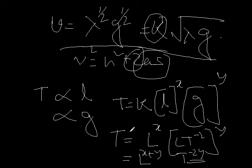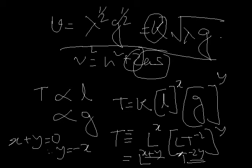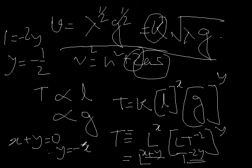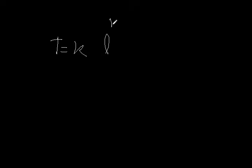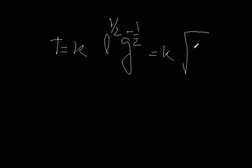Comparing powers: on the left side, T has power 1 and L has power 0. So we equate X plus Y to 0, meaning Y equals minus X. From the time comparison, 1 equals minus 2Y, so Y equals minus half. Since Y is minus half, X is plus half — because minus of minus half is plus half. Therefore, T equals K·L^(+1/2)·g^(−1/2), which we can write as K times the square root of L divided by G.